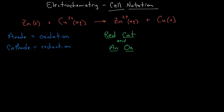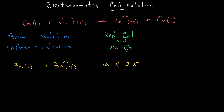For this reaction, zinc is going from zinc solid to zinc two-plus, which indicates a loss of two electrons. As we know from the OIL RIG mnemonic, oxidation is losing. So zinc is being oxidized, which means zinc is going to be the anode.